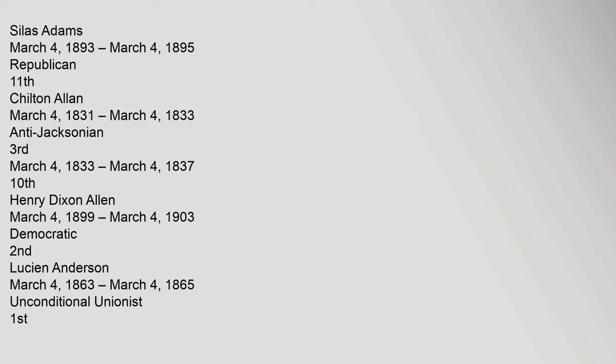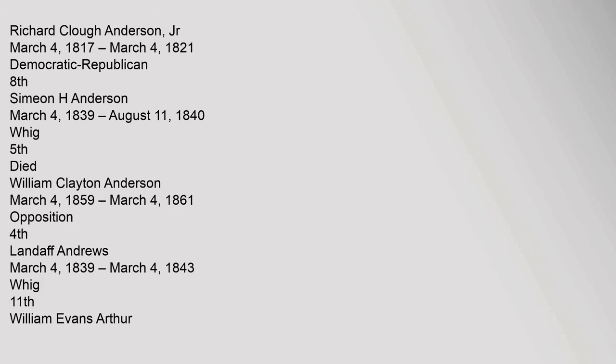Chilton Allen, March 4, 1883 to March 4, 1893, Democratic, 2nd. Lucian Anderson, March 4, 1863 to March 4, 1865, Unconditional Unionist, 1st. Richard Clough Anderson Jr., March 4, 1817 to March 4, 1821, Democratic Republican, 8th. Simeon H. Anderson, March 4, 1839 to August 11, 1840, Whig, 5th, died. William Clayton Anderson, March 4, 1859 to March 4, 1861, Opposition, 4th.